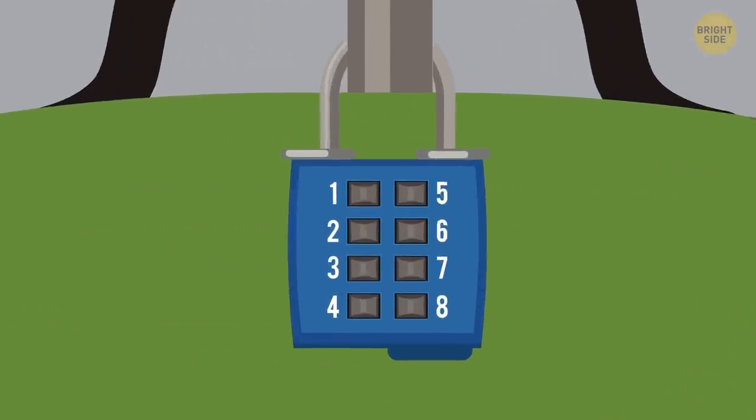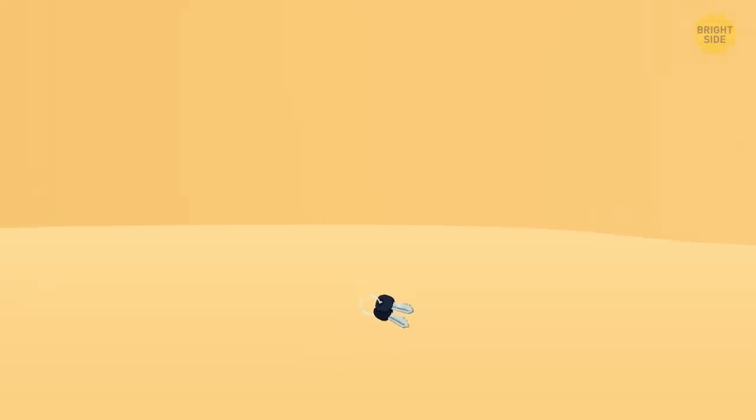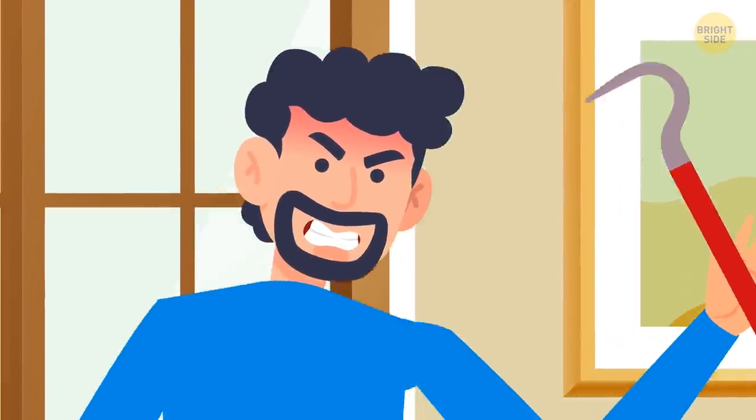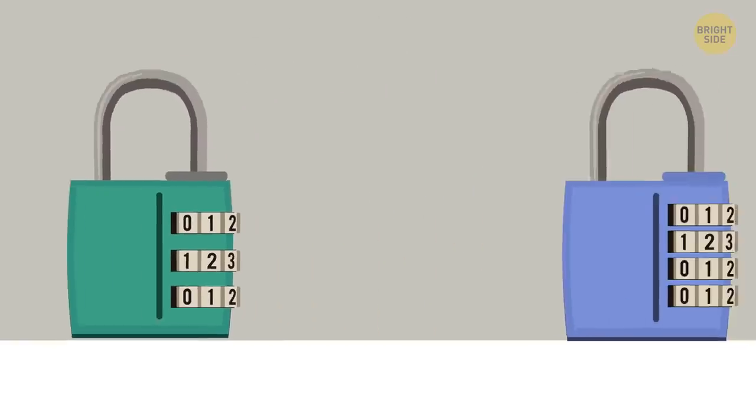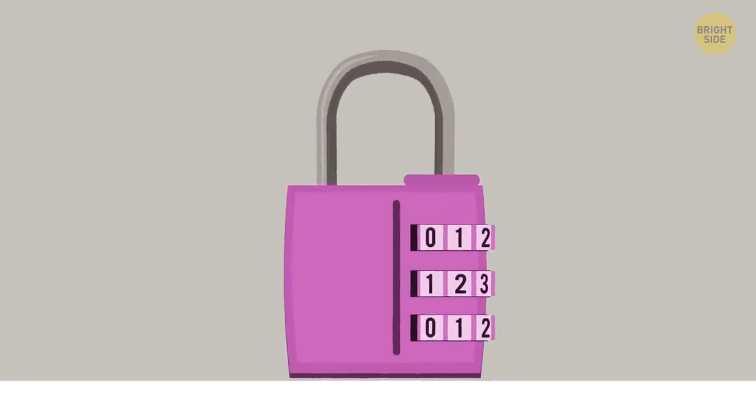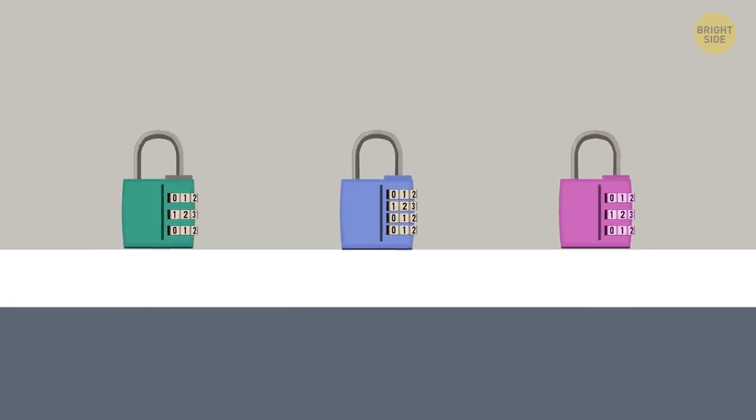Choose combination locks over padlocks. You can easily lose tiny padlock keys while traveling and then you'd have to break that lock at your final destination. 3-digit locks are more common, but you can find 4-digit models for extra security. Pick a metal lock in some bright color to make your bag safe and easier to recognize.